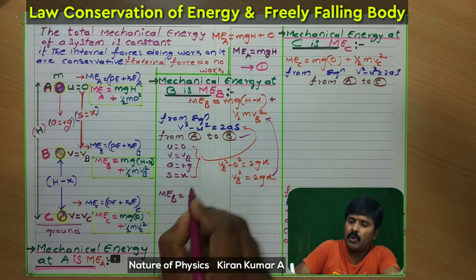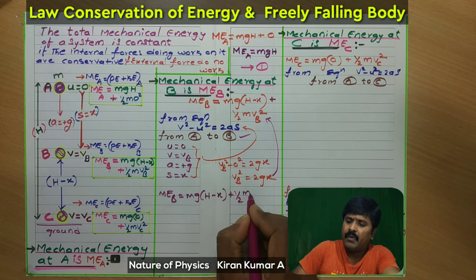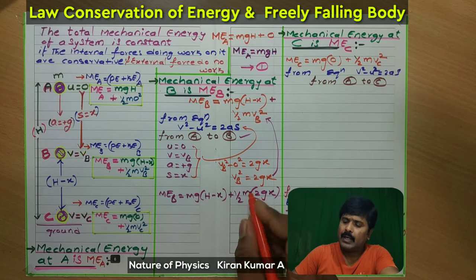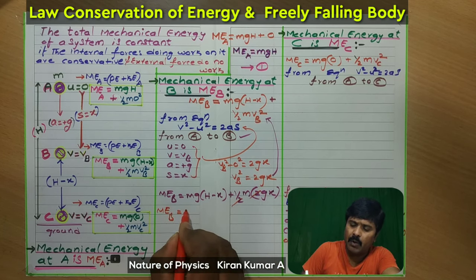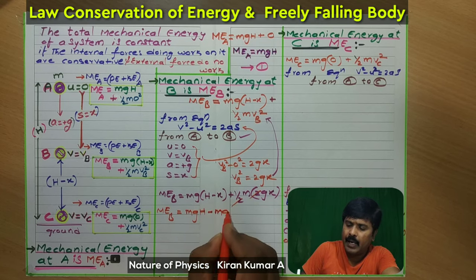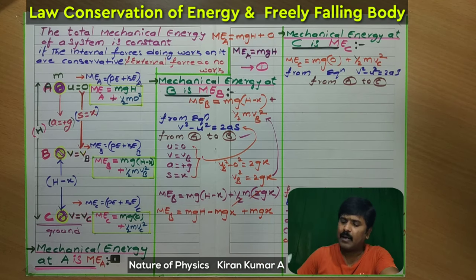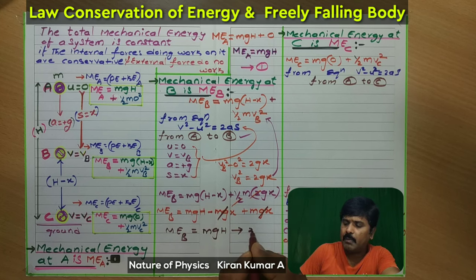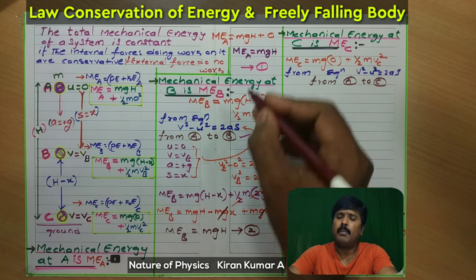Mechanical energy at point B equals potential energy mg(h − x) plus kinetic energy (1/2)m × 2gx. The factor of 2 cancels, giving mg(h − x) + mgx. Expanding: mgh − mgx + mgx. The −mgx and +mgx cancel, giving mechanical energy at point B equal to mgh. This is equation 2 — mechanical energy at point B is also mgh.